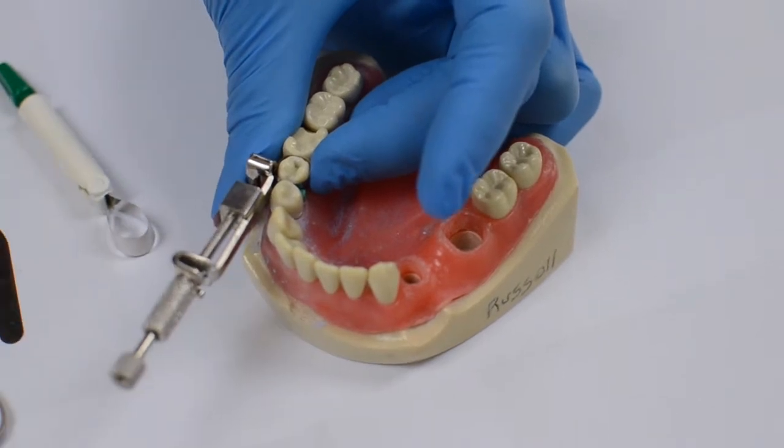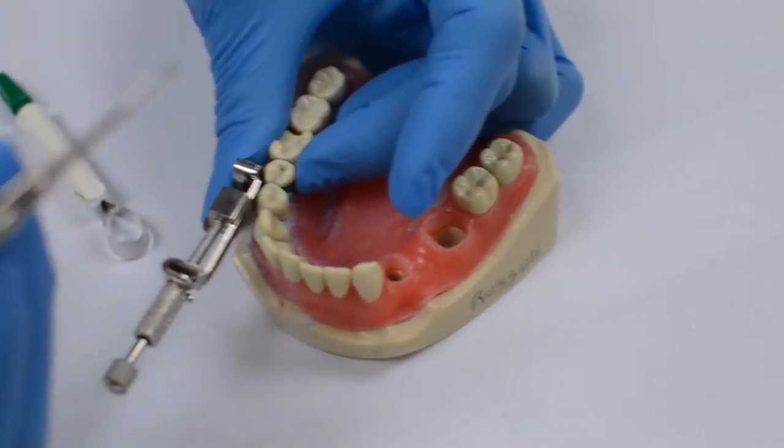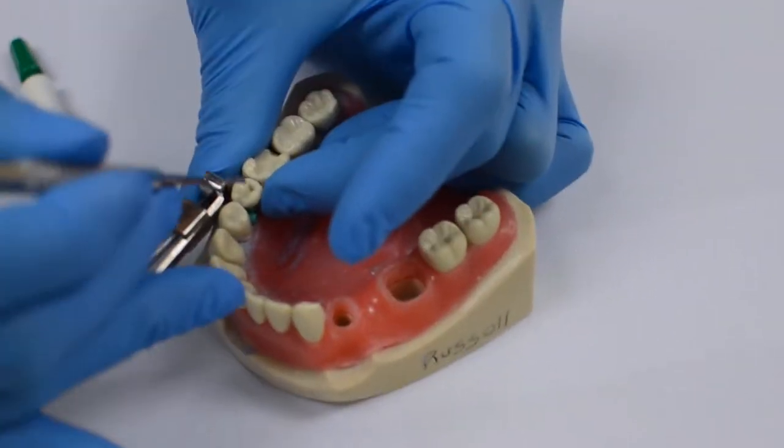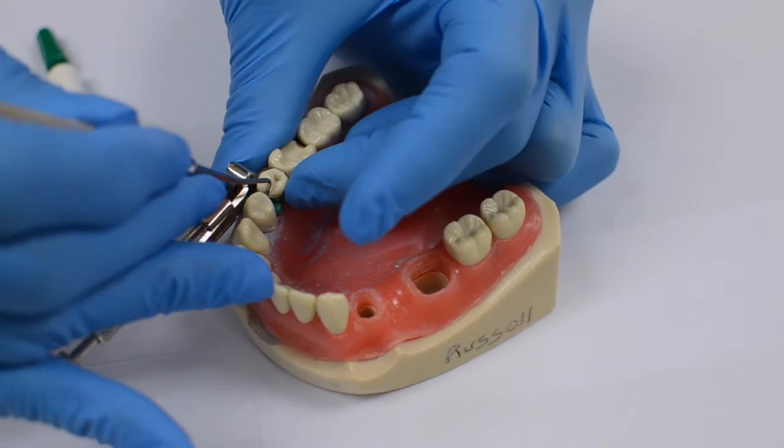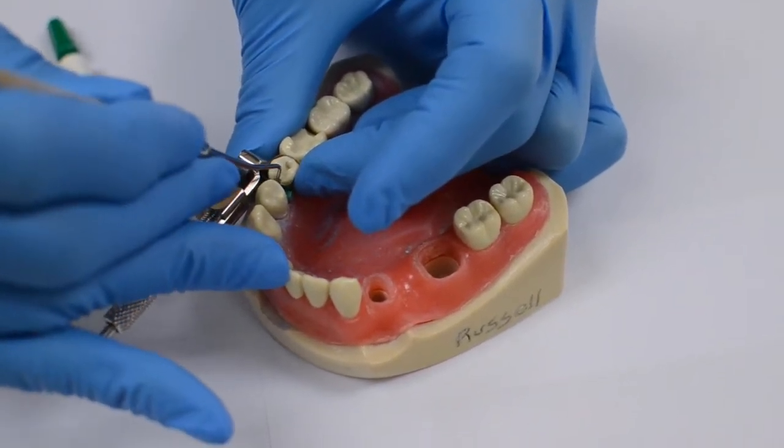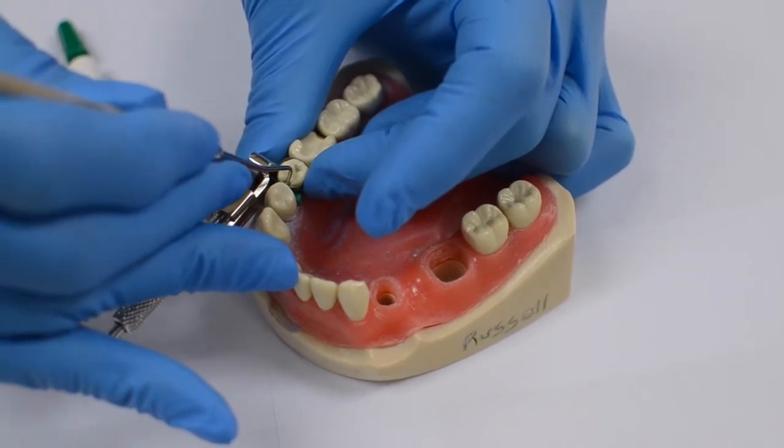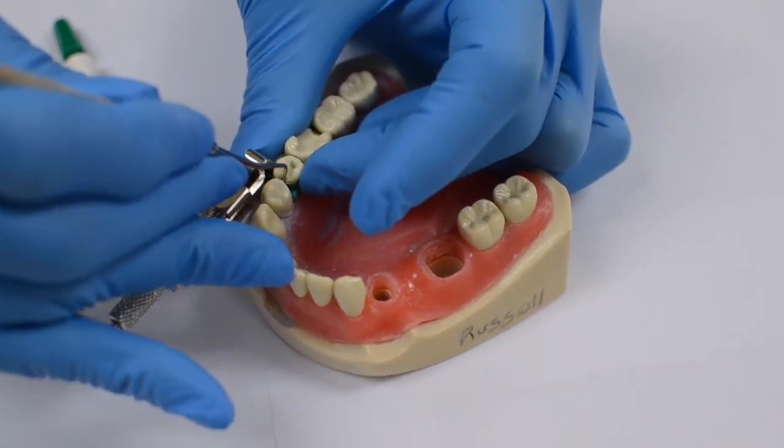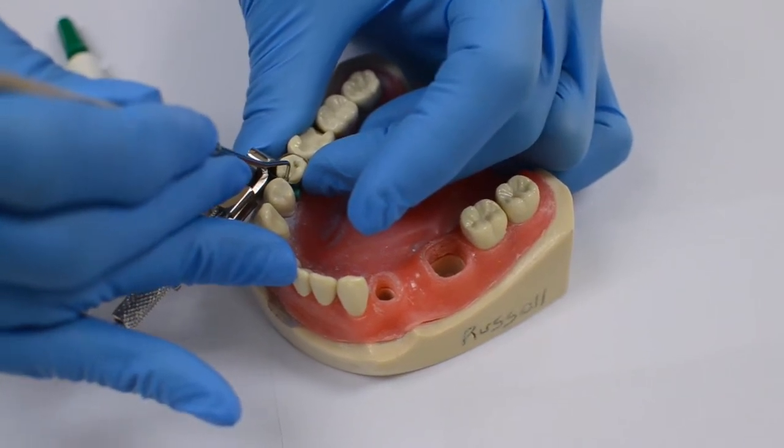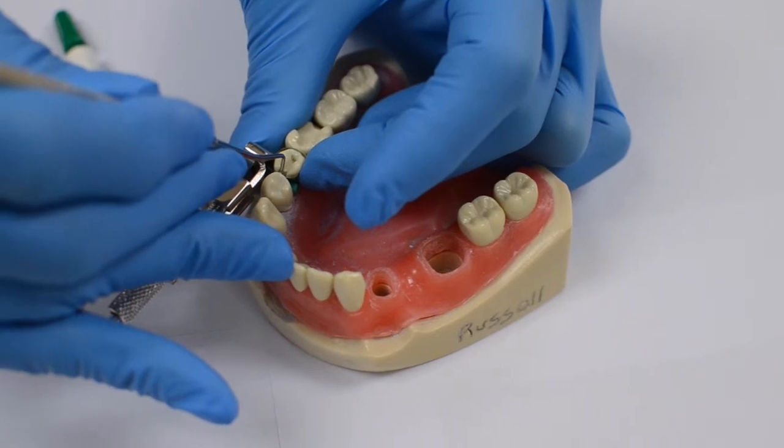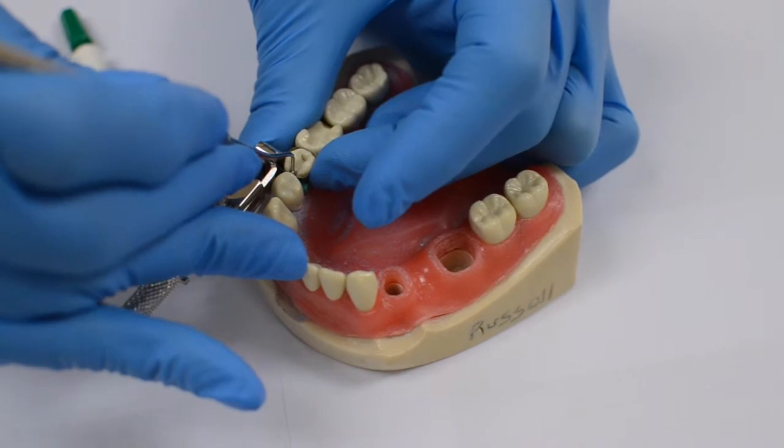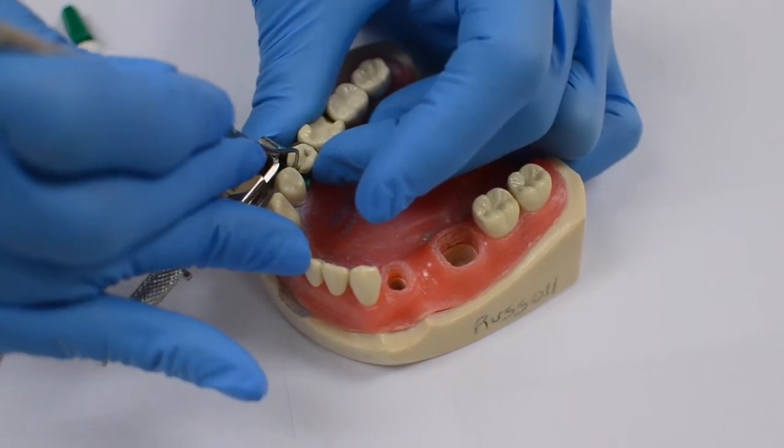Then we're going to burnish the band against the adjacent tooth. We can use this small ball burnisher. Sometimes I'll even use a small acorn burnisher or even the small amalgam condenser. The purpose of the wooden wedge is to actually create a little orthodontic movement, increasing the distance from tooth 29 to the distal of tooth 28. That helps us get nice positive contact.